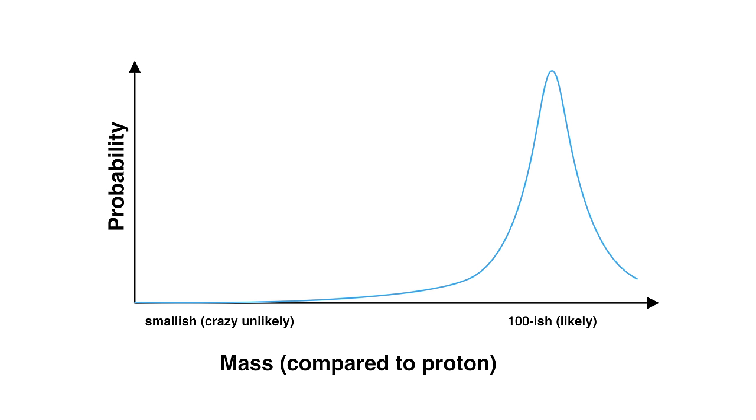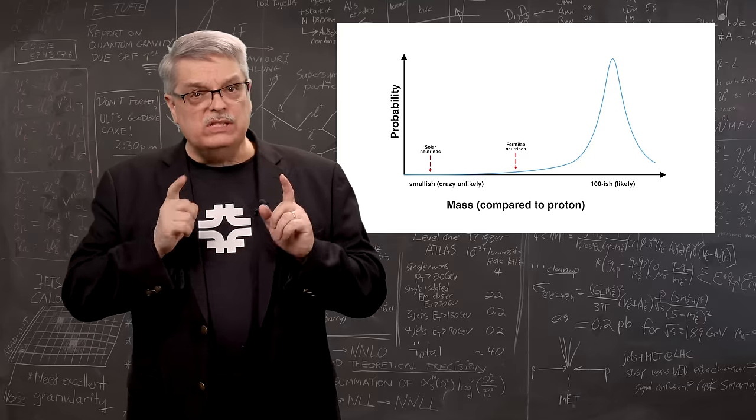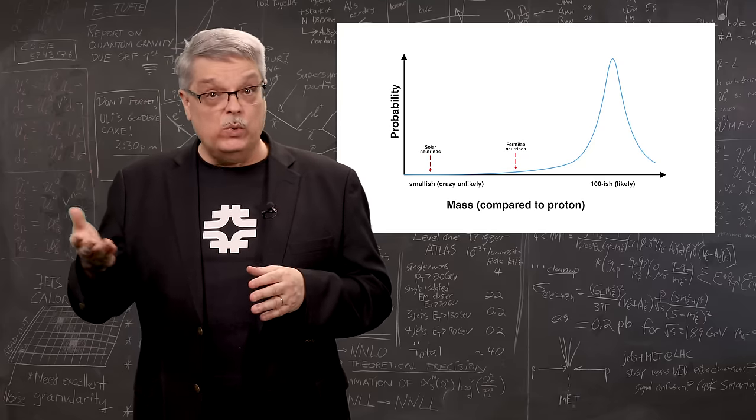Now in neutrino scattering using the Fermilab beam, the energies are generally much, much smaller than this 100-ish number. In fact, they tend to be way down here. And if you're looking at neutrinos from the sun that go through the earth, they're even closer to zero.